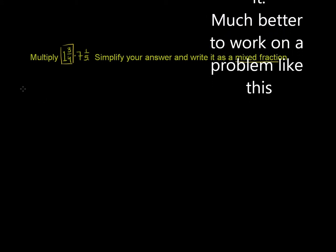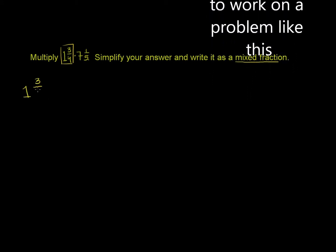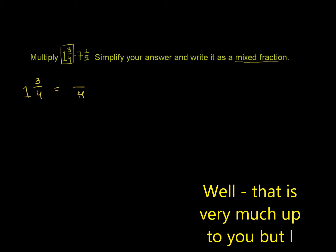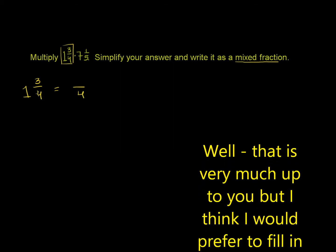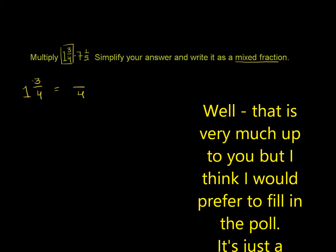So let's convert each of them. 1 and 3/4 is equal to - it's still going to be over 4, so you're still going to have the same denominator, but your numerator as an improper fraction is going to be 4 times 1 plus 3.